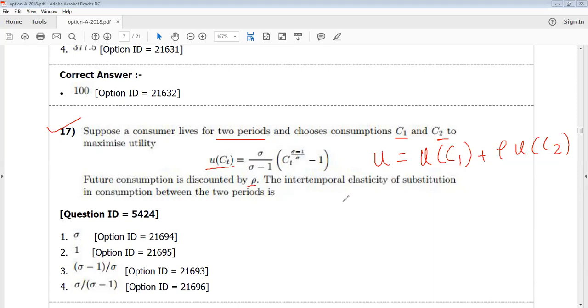Now I have to find out MU1. What is MU1 here? Basically U1 will be sigma by sigma minus 1, C1 to the power sigma minus 1 by sigma minus 1. So MU1 will be C1 to the power minus 1 by sigma.